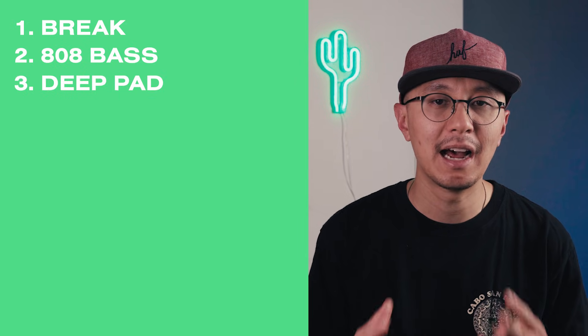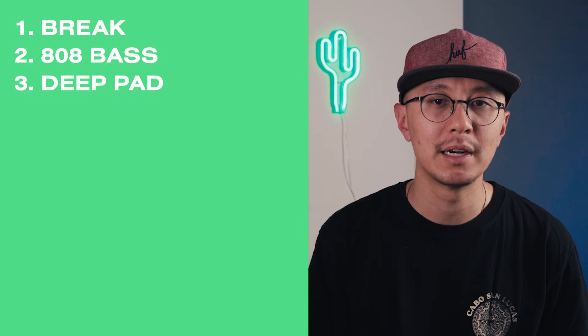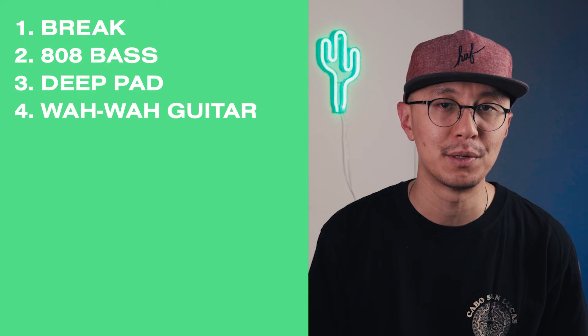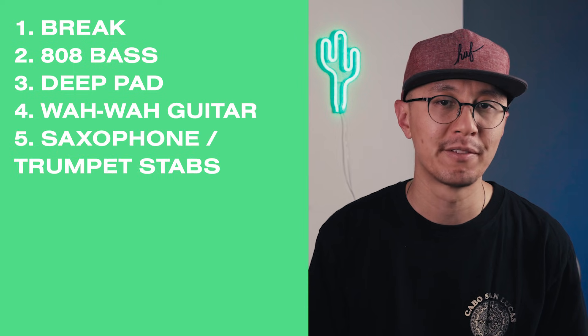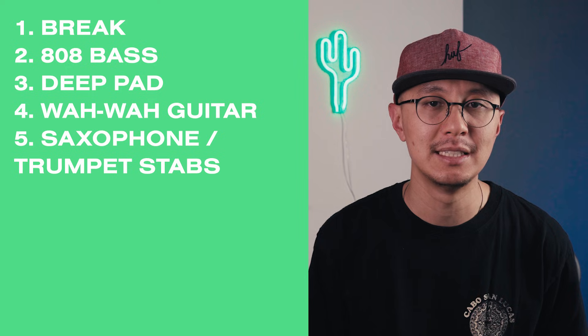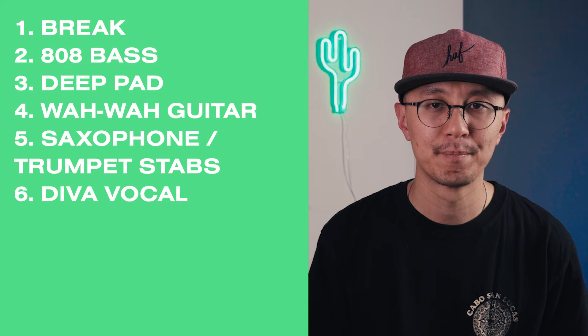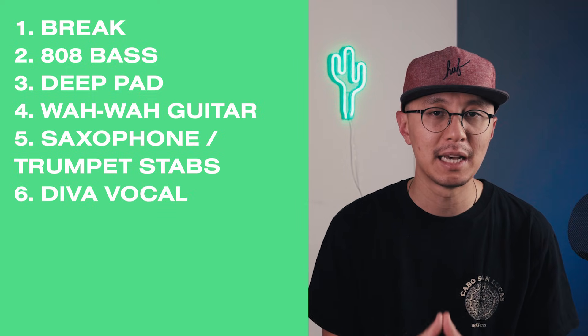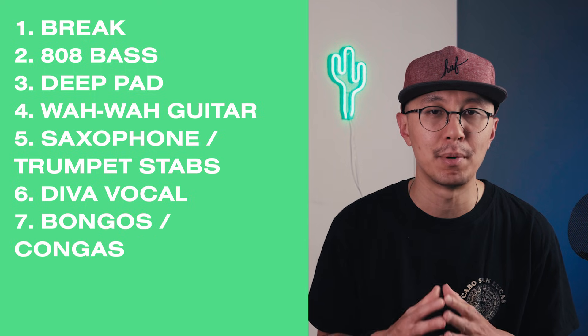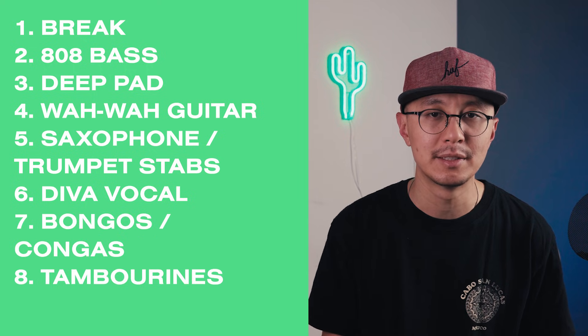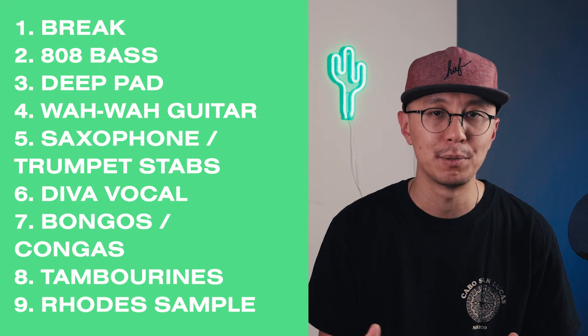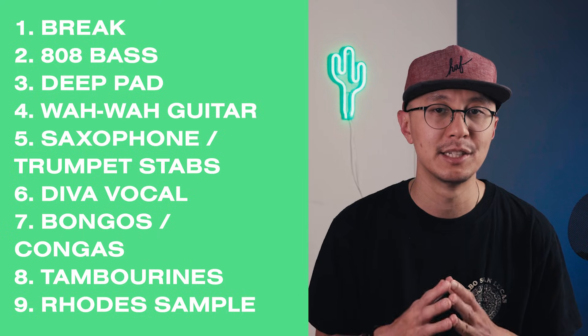You're going to want a wah-wah guitar sample, some trumpet or saxophone stabs, as well as a diva vocal sample with lots of reverb and delay. And once you have those down, you could also add some echoed up bongos, some tambourines, as well as a Rhodes sample to introduce a changeup in the track. So I hope you guys enjoyed this process and hopefully you learned something to add to your own creative style.